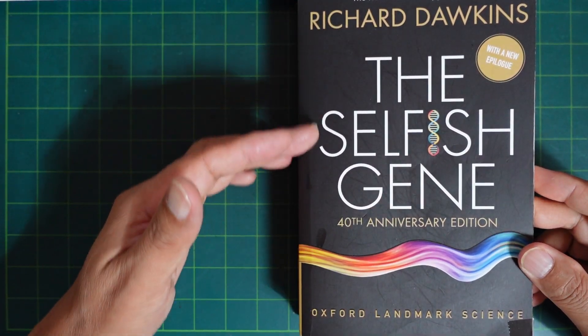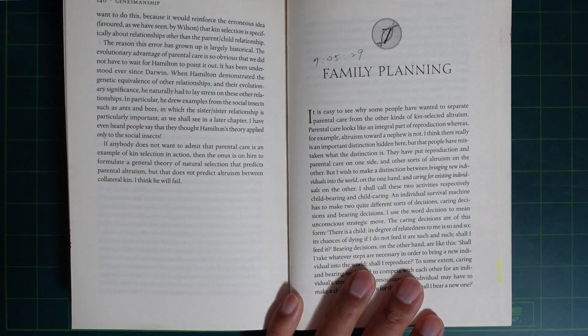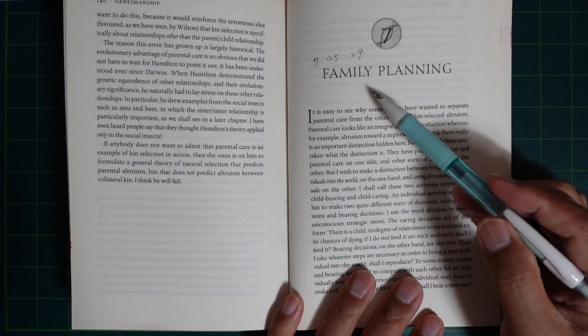Richard Dawkins, The Selfish Gene. Chapter 7. Family planning.